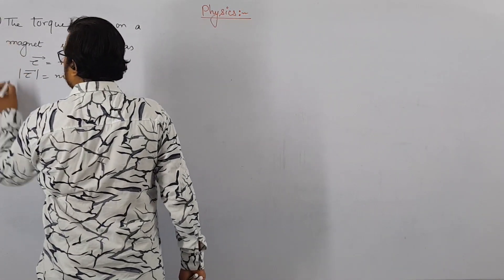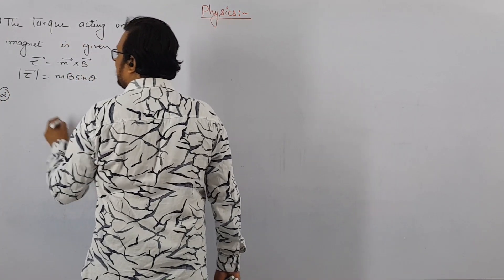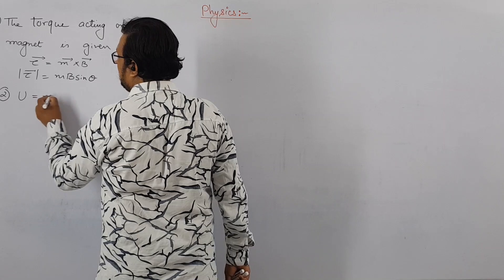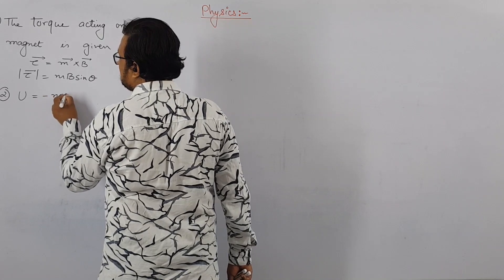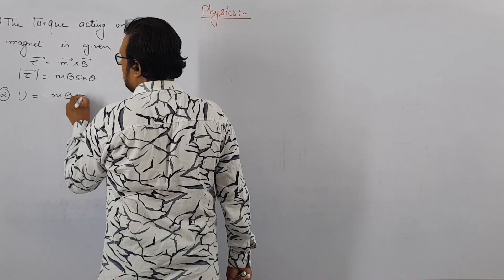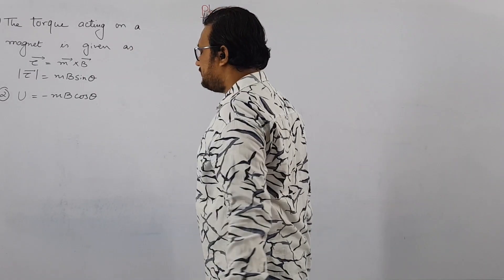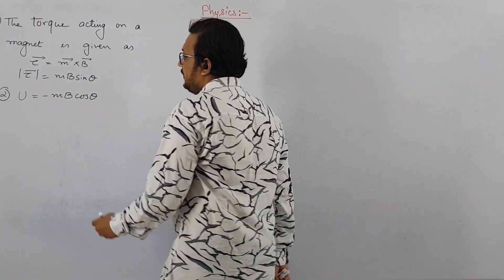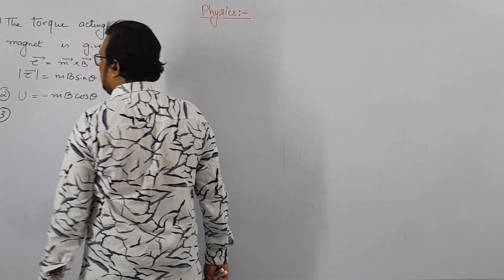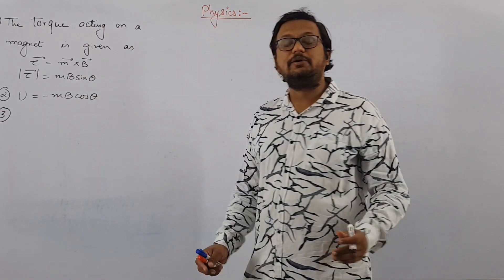The potential energy of a dipole kept in a uniform magnetic field is given as minus M dot B, or MB cos theta. This will be the potential energy when the dipole is kept in a uniform magnetic field.